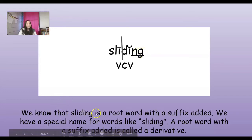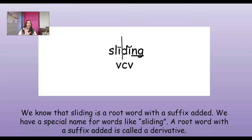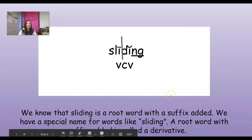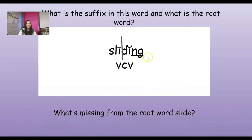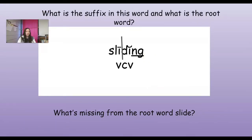We need to know that sliding is a word with a root word. If I have sliding, I have slide, and then we add the ING. Slide-ing. A root word with a suffix added is called a derivative. So what is the suffix in this word? That's right - I-N-G. And if ING is the suffix, what is the root word? Think about what I just said. Slide-ing. That's right - slide.